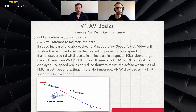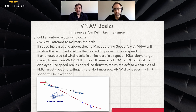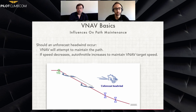The VNAV can even disengage if the limit speed is exceeded, just to protect us and let us know we are above the speed calculated in the FMS. As you can see in the picture underneath the text, the path is going to change because of this unforecast tailwind, pushing us out of our vertical path. Conversely, the opposite happens with a headwind — we'll discuss that in the next slide, basically what we need to do in that situation to maintain the path.